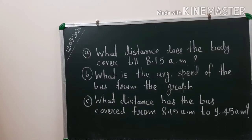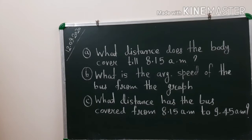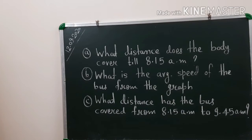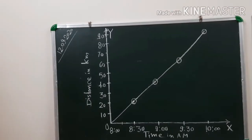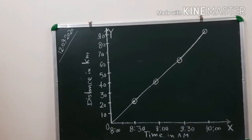The first question is: what distance does the body cover till 8:15 a.m.? Second, find the average speed of the bus from the graph. And last, what distance has the bus covered from 8:15 a.m. to 9:45 a.m.? Here you can see the graph. For the first question, what distance does the body cover till 8:15 a.m.?